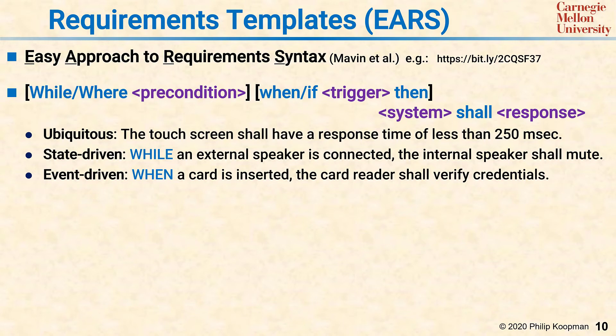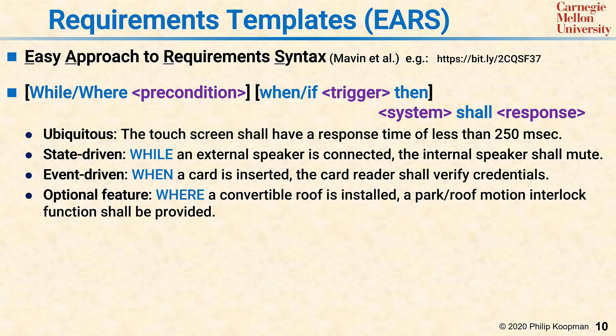There's the optional feature pattern: 'Where a convertible roof is installed, a park roof motion interlock function shall be provided.' The rationale is that the roof doesn't tear off when the car starts driving down the street. In this case, the 'where' keyword is intended to mean there's a feature or component that might or might not be in the system, but if it's there, this requirement applies.